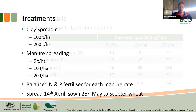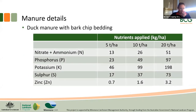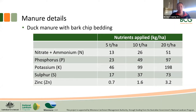Learning from our mistakes last year, we spread the clay and manure on the 14th of April, allowed it to get a rain on it, and then sowed to Scepter wheat on the 25th of May — spot on district sowing time for that variety in that area. The manure was different again, as most people would be aware — your manure is different for pretty much every source. At 20 tonnes per hectare we're putting out 51 kg/ha of nitrogen, 97 kg/ha of phosphorus, nearly 200 kg/ha of potassium, 73 kg/ha of sulfur, and 3 kg/ha of zinc.